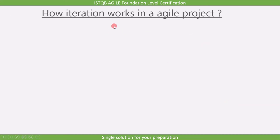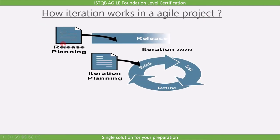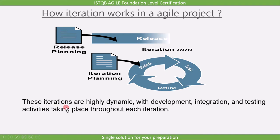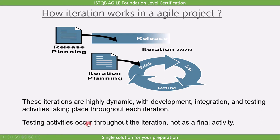Now let's see how iteration works in an agile project. At the beginning of the project, there is a release planning period, followed by a sequence of iterations. At the beginning of each iteration, there is an iteration planning period. Once the iteration scope is established, the selected user stories are developed, integrated with the system, and tested. These iterations are highly dynamic, with development, integration, and testing activities taking place throughout each iteration — not as a final activity.